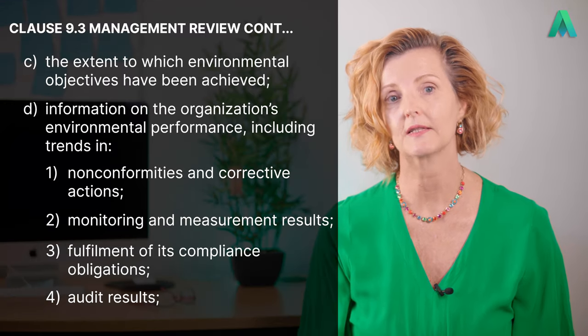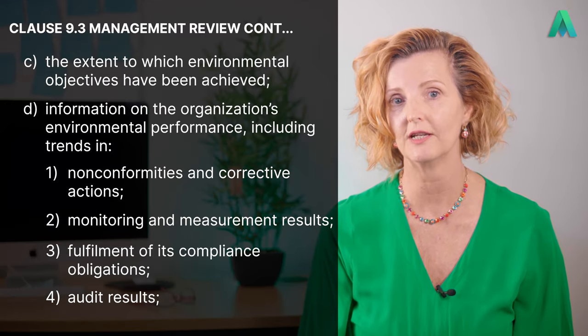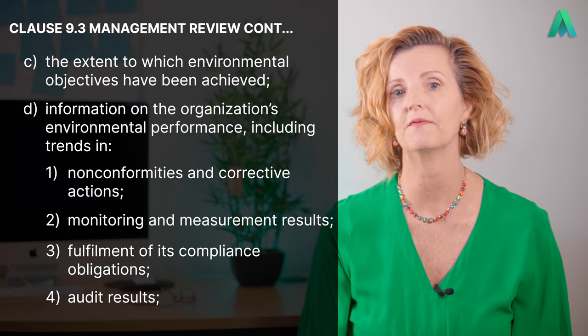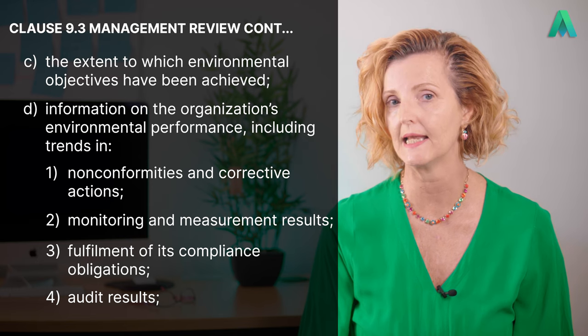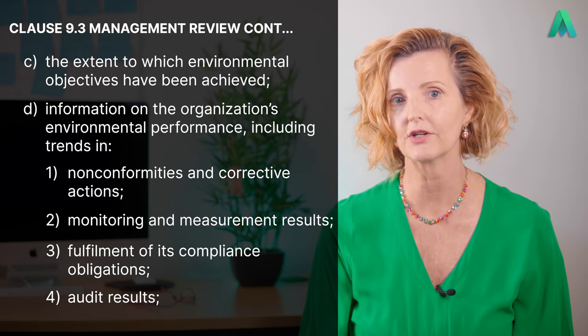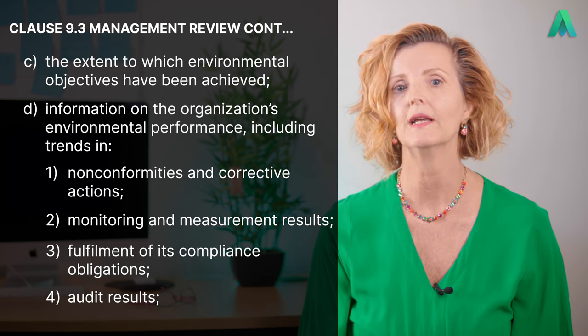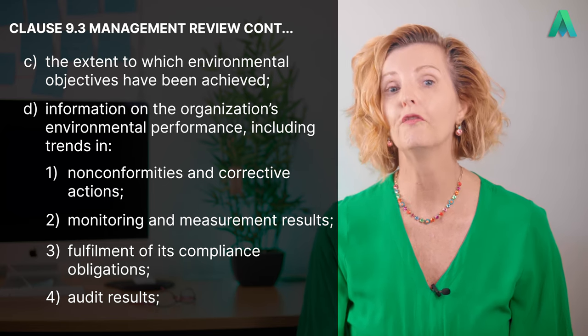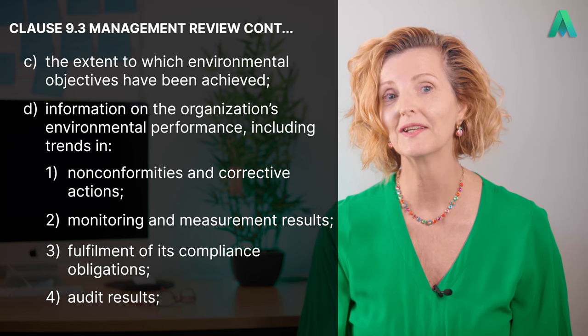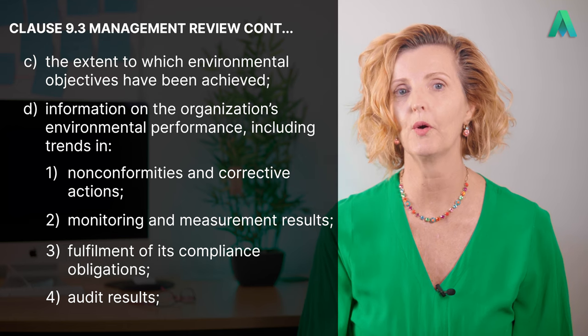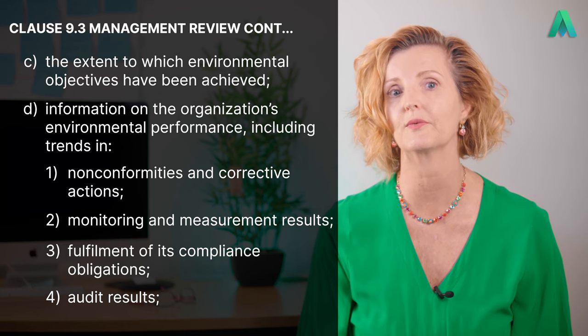The clause then lists further areas for consideration: C, the extent to which environmental objectives have been achieved; D, information on the organisation's environmental performance, including trends in non-conformities and corrective actions, monitoring and measurement results, fulfilment of compliance obligations, and audit results. Each of these requirements can be referred back to their own clauses within ISO 14001, and understanding each of those clauses will help you review and determine information and trends, positive or negative.